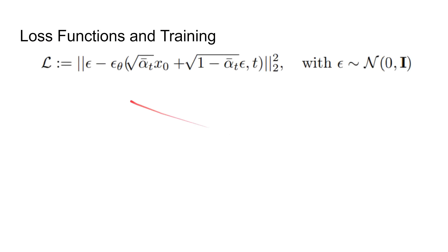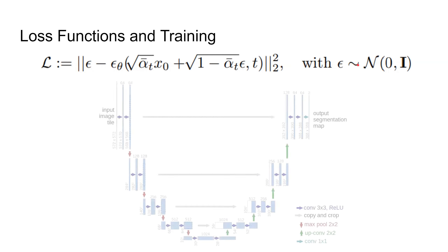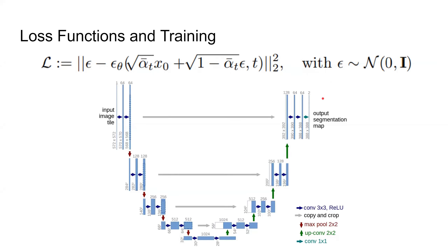The final loss function is trying to minimize the difference between noises, where the noise is controlled by the Gaussian. This is trained using a U-Net, because we are dealing with the same image size, which is a pretty good fit for U-Net. The U-Net predicts which noise we want to remove, and we gradually remove it in the backward procedure.